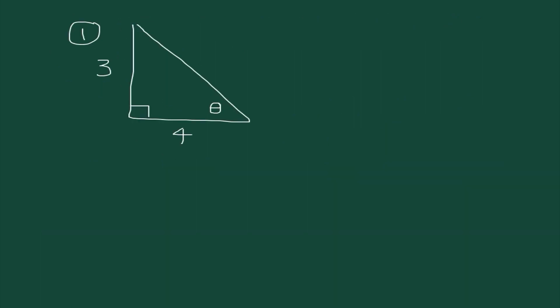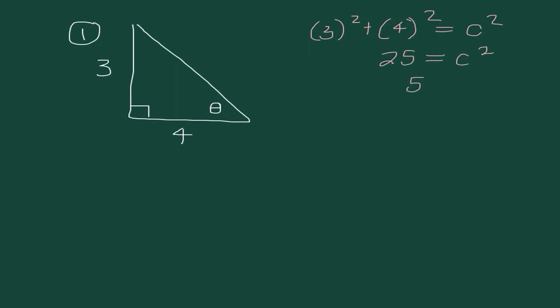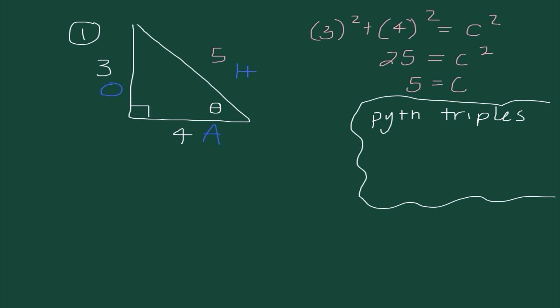The directions for this entire lecture are the same: find all six trigonometric ratios. We're starting with a super easy example where we just have a triangle with two sides given and a reference angle indicated. First, I know I need to use the Pythagorean theorem to find the missing side. I end up getting 25 = c², so 5 is our hypotenuse. Three is straight across from our angle of reference, so that's the opposite side, and 4 is our adjacent side.